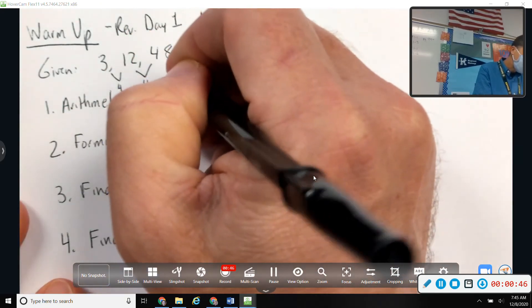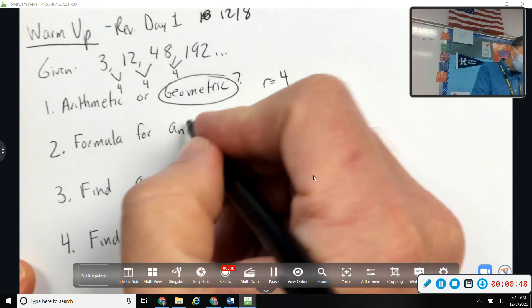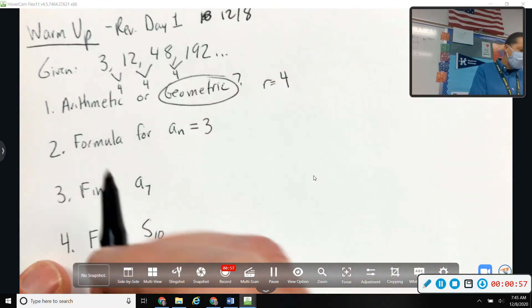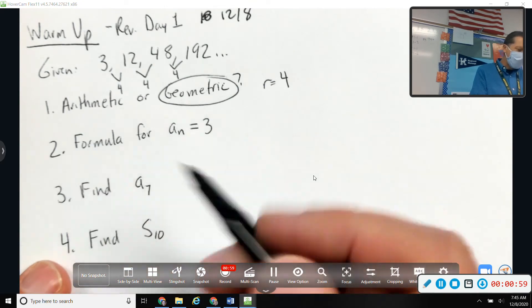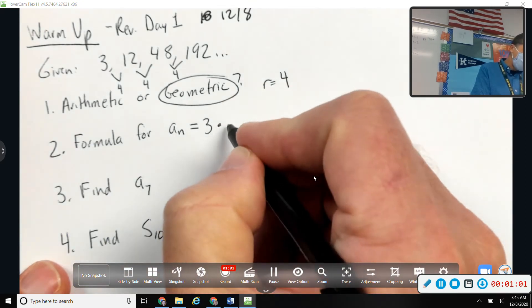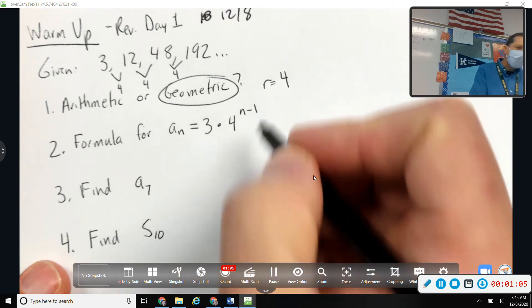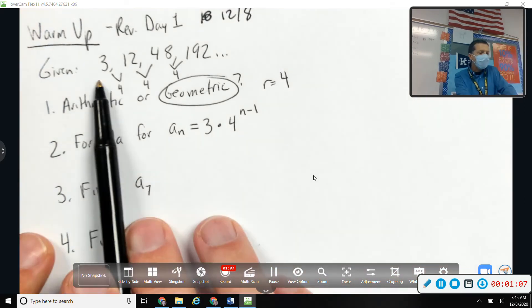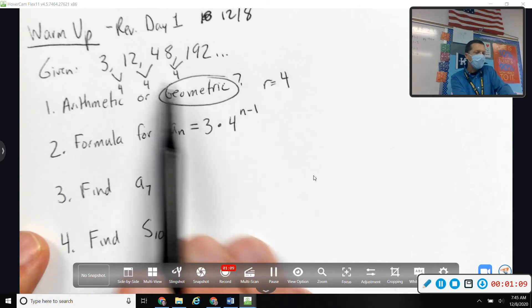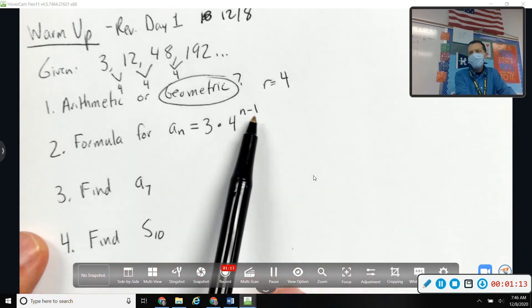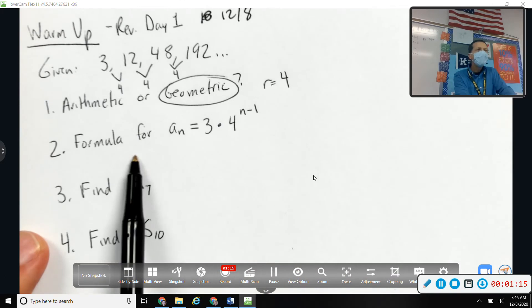Alright, the formula for aₙ you may need to look it up, but you may have done it enough to kind of be familiar with it. We always start with the first term, and then arithmetic we would add, geometric we're going to multiply by four. And this is that n minus one thing because we're already at the first step. If we want to get to the second term we multiply once, if you want to get to the eighth term we multiply seven times. So that n minus one thing, or you just look in your notes and trust it.